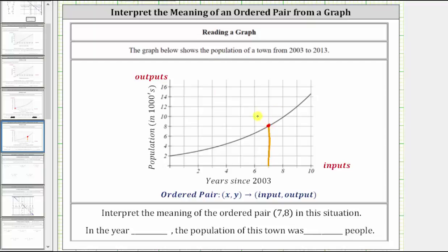To find the corresponding output, we move horizontally to the vertical axis, and we can see the corresponding output is 8. The ordered pair (7, 8) is represented by this point on the graph.